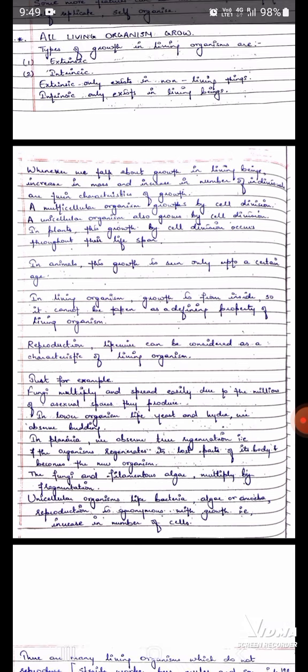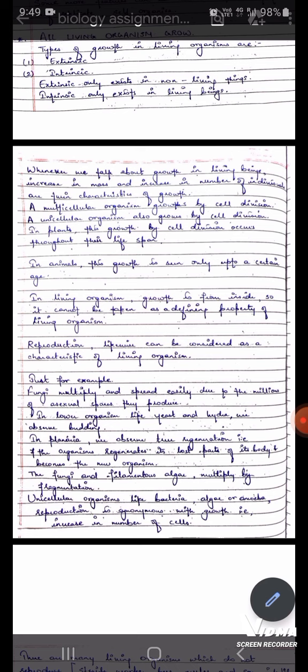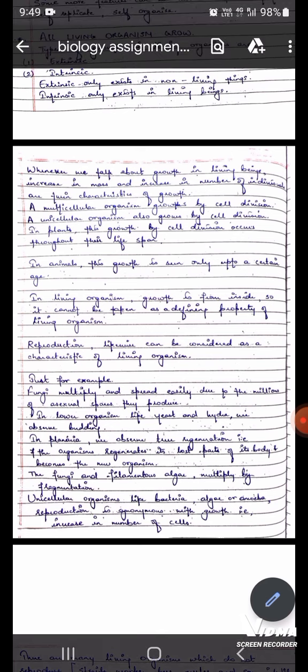A multicellular organism grows by cell division. It is the same in unicellular organisms. They also grow by cell division. But there are two types of cell divisions. Multicellular organisms undergo mitosis, and in unicellular organisms, it is binary fission.